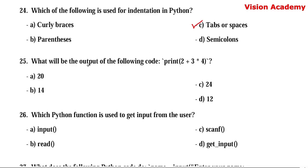Question number 25. What will be the output of the following code: print(2 + 3 * 4)? Option A: 20. Option B: 14. Option C: 24. Option D: 12. As per basic mathematical rules (BODMAS), we evaluate higher priority operators first. Multiplication comes before addition: 3 × 4 = 12, then 12 + 2 = 14. Hence, option B — 14 — is the right answer.